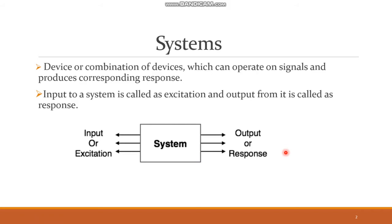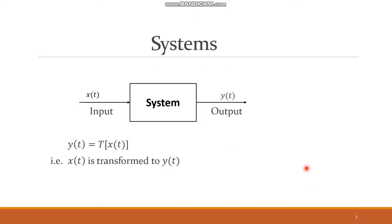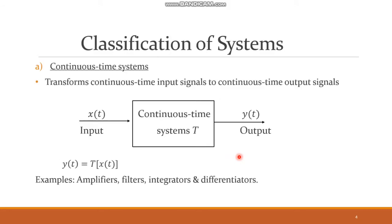The input to a system is called excitation and the output from it is called response, as pictorially represented here. A system can transform an input continuous time signal x(t) into an output signal y(t), written as y(t) = T{x(t)}, where x(t) is transformed to y(t).